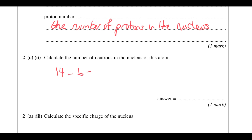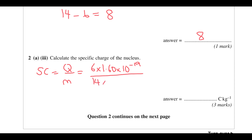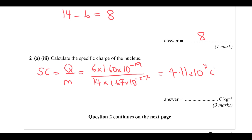Calculate the number of neutrons in this atom. The nucleon number is 14 and the proton number is 6, so that must mean there are 8 neutrons. Calculate specific charge: specific charge is charge divided by mass. It has 6 protons, so 6 times 1.60×10⁻¹⁹. Its mass is 14 times the mass of a nucleon. This gives us 4.11×10⁷ coulombs per kilogram.